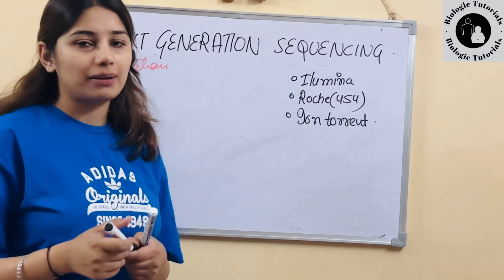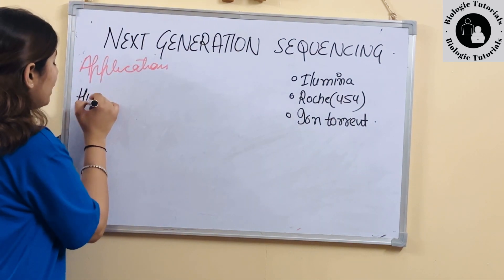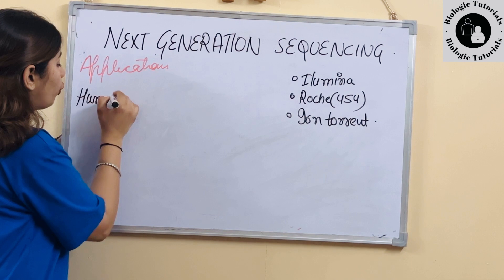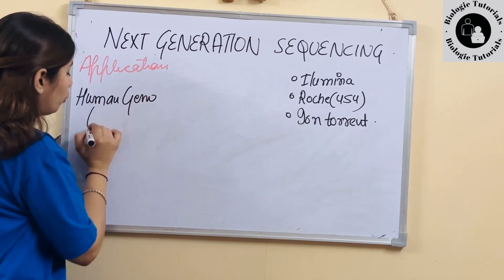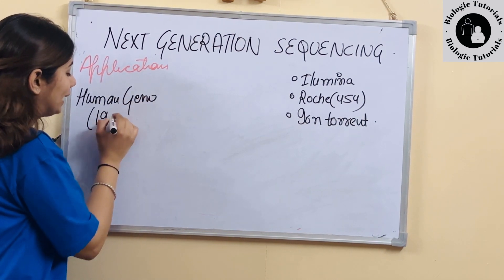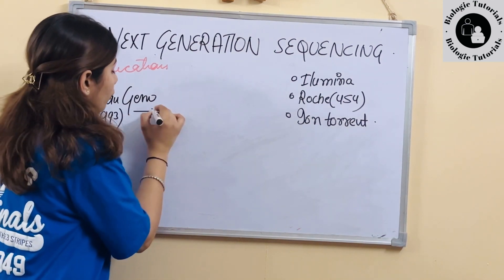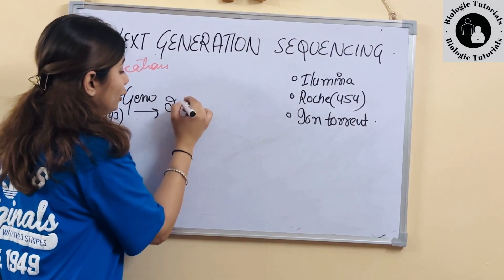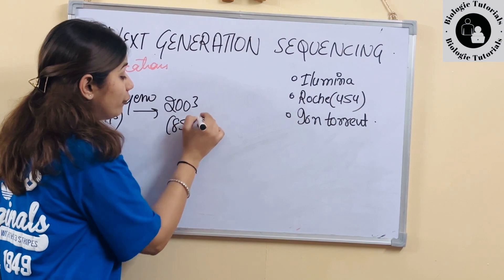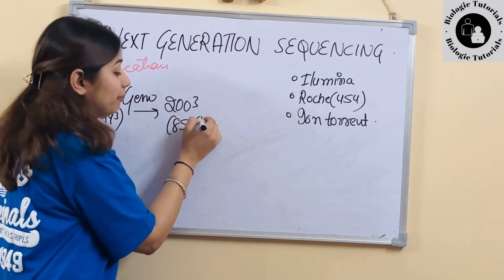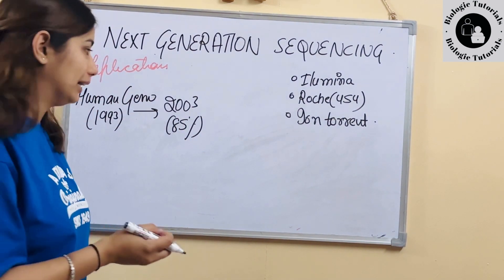Toh iske liye thoda sa back mein chalte hain. Hua kya? Ki jo humara Human Genome Project tha — Human Genome Project ko 1993 mein shuru kiya gaya. Aur approximately hume pata hai ki 2003 ke around bhi humein sirf 85 percent of human genome complete mila tha.